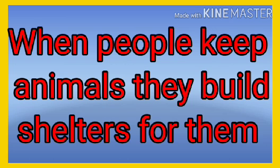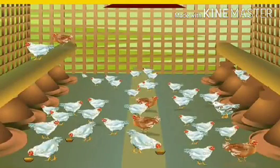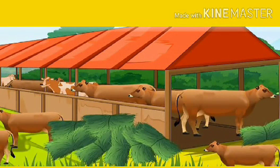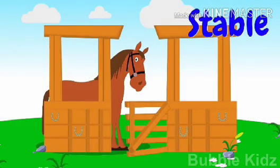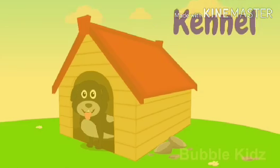Now we are going to discuss the last point: shelters for domestic animals. When people keep animals, they build shelters for them. The shelter built for hens is called a chicken coop or hen house. A house for a cow is called a cowshed. A shelter for a horse is called a stable. A house for a dog is called a kennel.